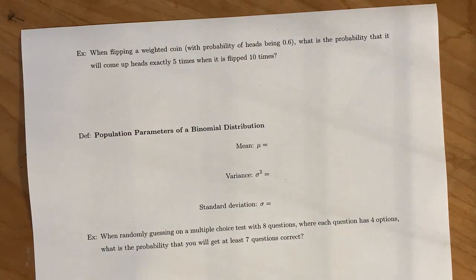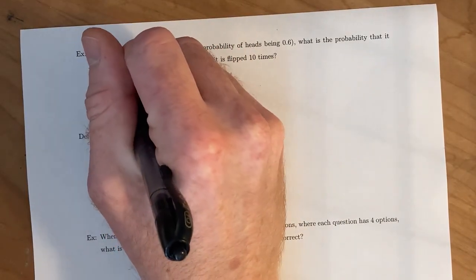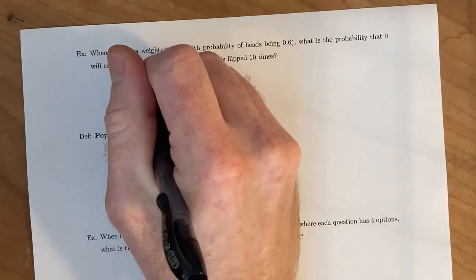And this is an example of where we want to calculate what the random variable is. So we're going to be flipping a weighted coin. Heads has a probability of landing 60% of the time. And we're asked to find the probability that it will come up heads exactly 5 times out of 10 flips. So we want to find the probability that the random variable is equal to 5. And if we use our formula,